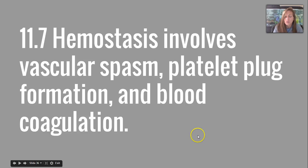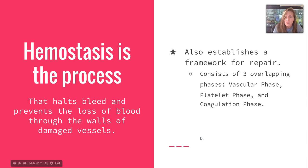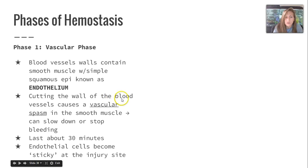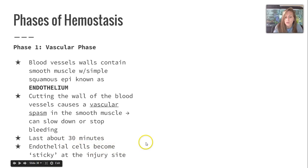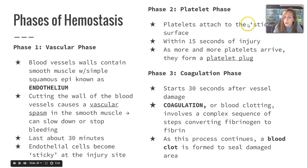Finally, section seven covers hemostasis, which involves vascular spasms, platelet plug formation, and blood coagulation. Hemostasis is the process that holds blood and prevents its loss through the walls of damaged vessels, and it also establishes a framework for repair. Phase one is the vascular phase: blood vessel walls contain smooth muscle and endothelium, and cutting the vessel wall causes a vascular spasm that can slow or stop bleeding, lasting about 30 minutes, while endothelial cells become sticky to allow the platelet phase to begin. Platelets attach to that sticky surface within 15 seconds of injury, forming a platelet plug, leading to the coagulation phase, which starts 30 seconds after vessel damage. Coagulation — blood clotting — involves a complex sequence of steps that convert fibrinogen to fibrin to seal the damaged area.